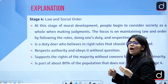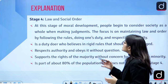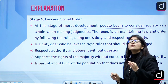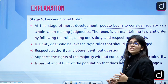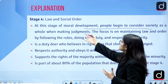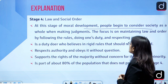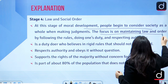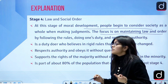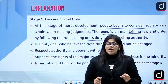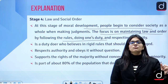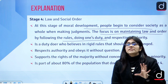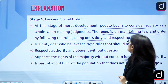In stage four, you start thinking about law and social order. At this stage of moral development, people begin to consider society as a whole when making judgments. You stop being selfish and think about the greater good of society. The focus is on maintaining law and order and doing your duty properly — as a citizen, as a teacher. These people are idealists who know the rules and regulations and follow them diligently.